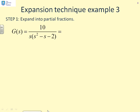Next example. Expand into partial fractions: G of s equals 10 over s times s squared minus s minus 2. So again, we want to work out where the poles are. And in this particular case, you can see you've got a pole at plus 2 and a pole at minus 1. So I can write this as A over s plus B over s minus 2 plus C over s plus 1. So there's my partial fraction structure.